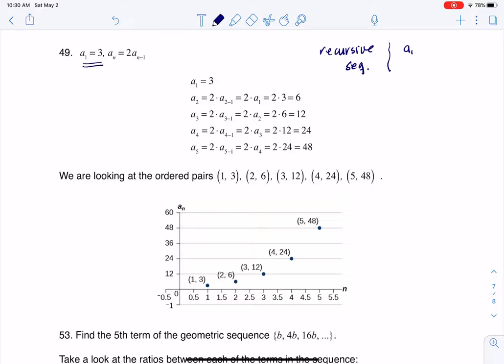And then they give me a formula for my current term. So I need some kind of formula for my current term, and they gave it to me, here it is, a sub n, and it's double the previous term.